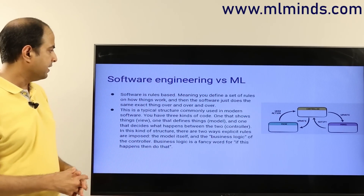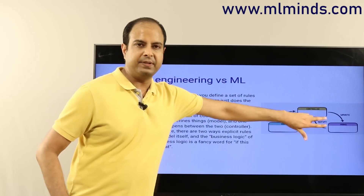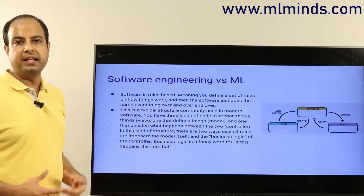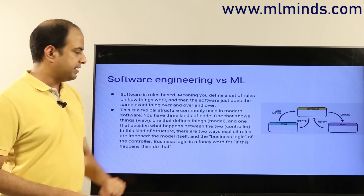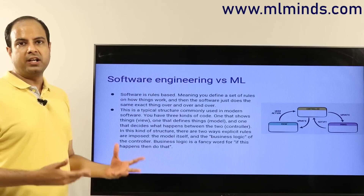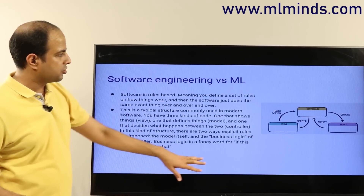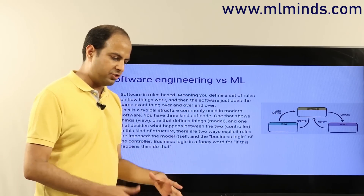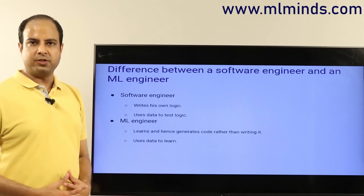There is a controller that controls when to visualize, what to visualize, what input to give to the model, and therefore what output to show. In this structure there are two ways explicit rules are imposed: the model itself and the business logic. The business logic is encoded in the model and also the controller — practically if-else kind of rules.